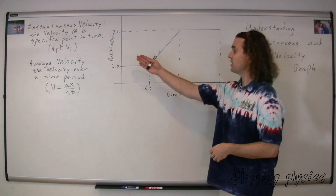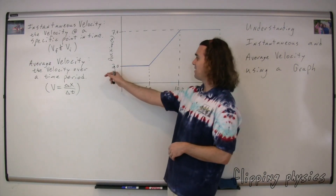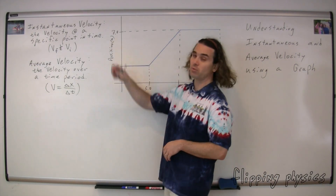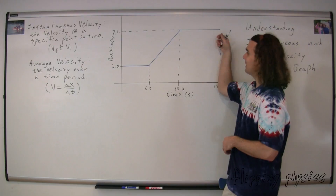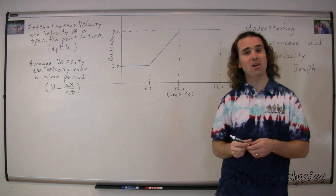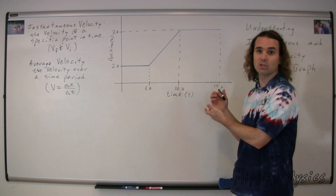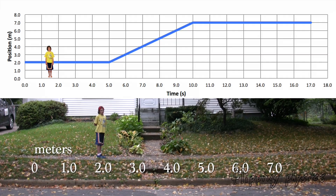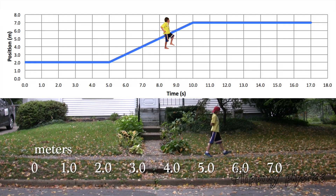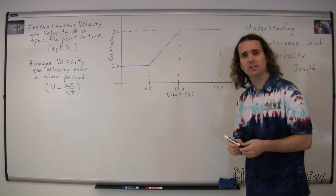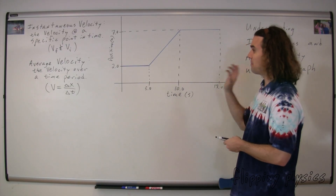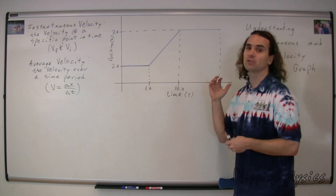We have our position as a function of time graph, position in meters, time in seconds. On our position axis we have 2.0 meters and 7.0 meters. On our time axis we have 5.0, 10.0, and 17.0 seconds. The blue line indicates the motion of the object. Genevieve, could you please be our object this time? Could you please walk the graph for us so we can see what it looks like? Now I'm going to ask several questions to help us understand the difference between instantaneous and average velocity.